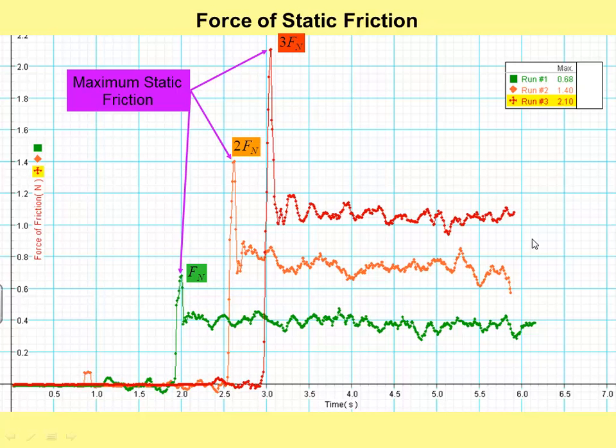Well go back to here. The static friction, let's look at the orange one. Static friction wasn't just one value. At this point, we were pulling, but it wasn't moving yet. So static friction had a range of values, anywhere from zero all the way up to a maximum.